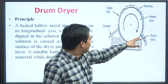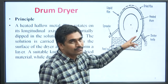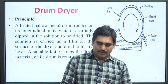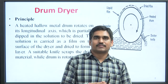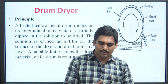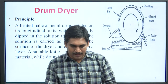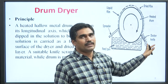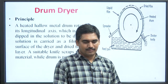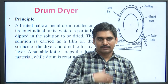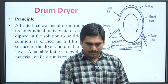As seen in the diagram, part of the drum is dipped into the feeding pan or into the solution to be dried. The solution is carried by the drum as a film on its surface and dried to form a layer. A suitable knife scrapes the dried material while the drum is rotating.